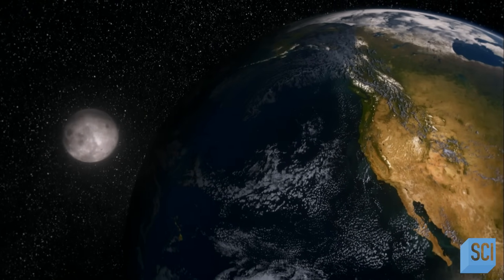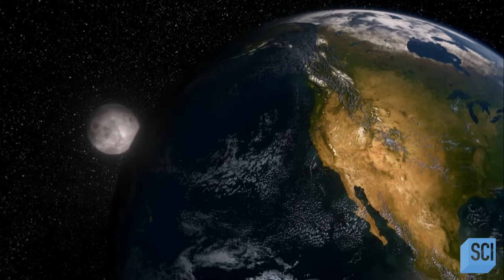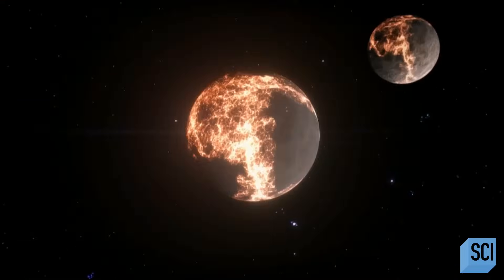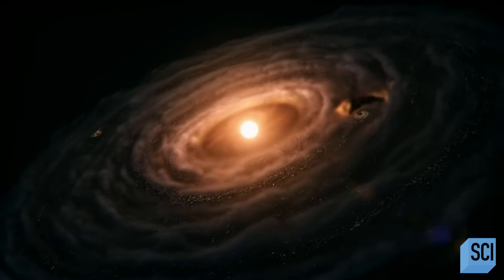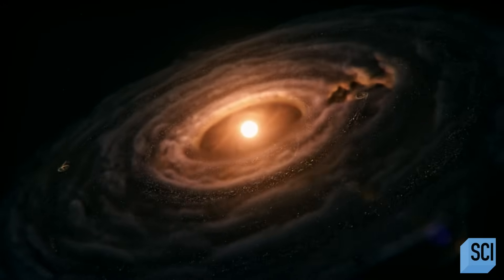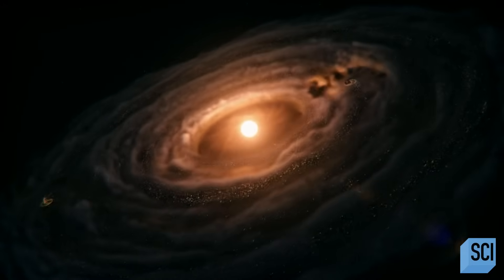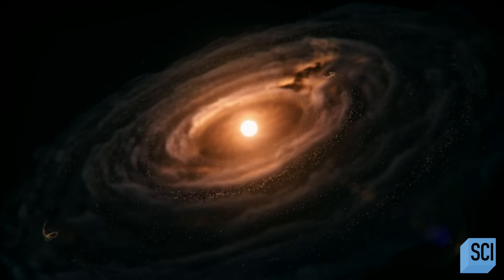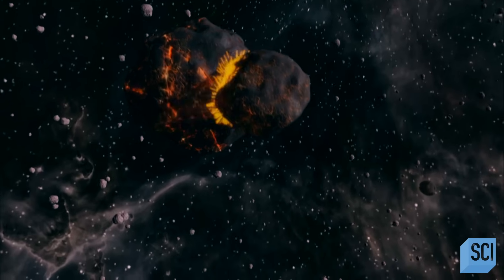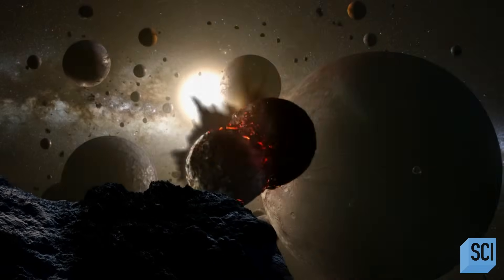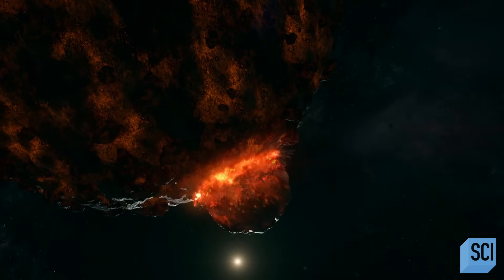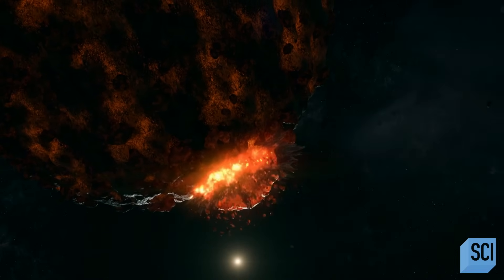To discover how the moon and Earth are so alike, we need to go back to the violent early solar system. The early solar system was incredibly smashing. Things were just running into each other. Objects that formed were broken apart, reforming. It was a chaotic inner solar system.